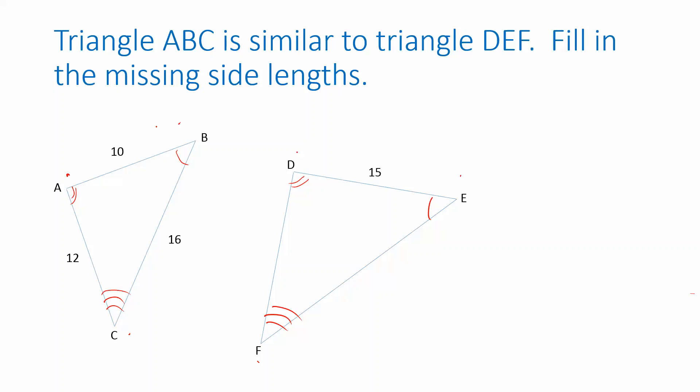So now there are two missing side lengths on the triangle DEF. Let's call them X and Y. It doesn't matter which one is which. Well, one thing I know about similar triangles is that if I take a ratio of side lengths on the second triangle, that ratio should be equal to the corresponding ratio on the first triangle.